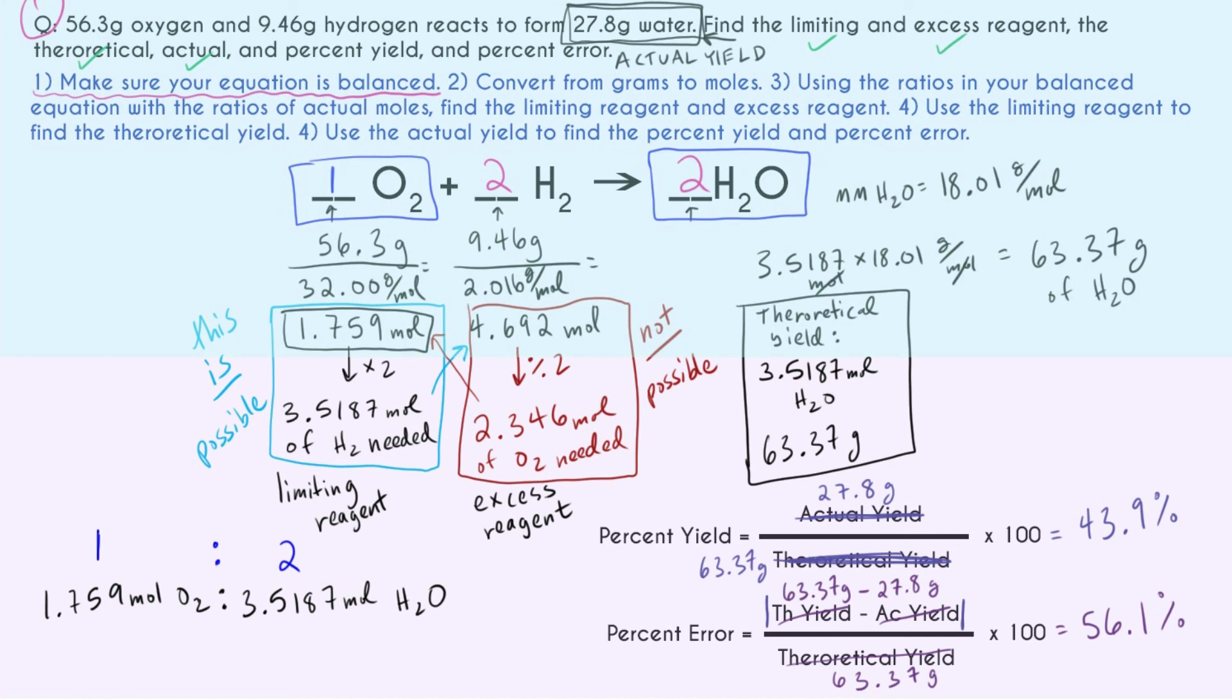At the end of every chemistry problem, we always have to do sig figs. Let's go ahead and do a check for that. Our sig figs are only going to come from the numbers we were given in the problem. So that means we have a limitation of one, two, three. One, two, three. One, two, three. So we have a limitation of three sig figs. So looking at all of our answers, the first thing we were asked to do is the limiting reagent and the excess reagent. So there really are no sig figs for that. We just have to label what's limiting and what's excess. And the actual yield was given to us. That just had three sig figs.